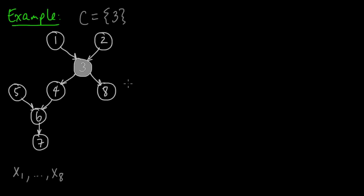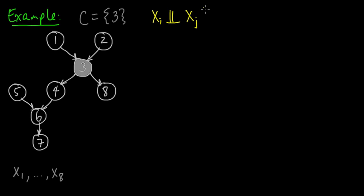So now what do we want to know? We want to know, for pairs of individual random variables, is Xi conditionally independent of Xj given C? And in this case, C is X3.